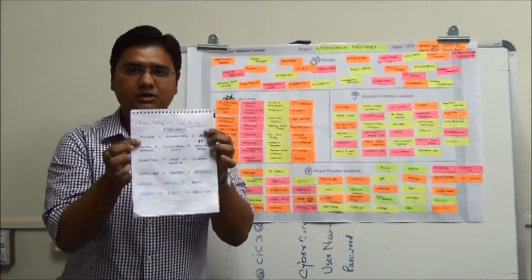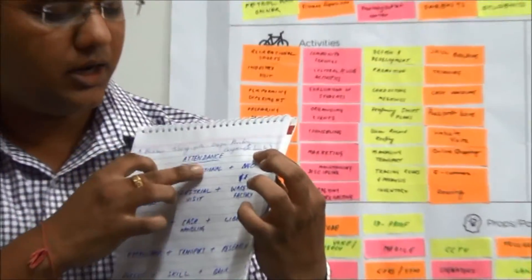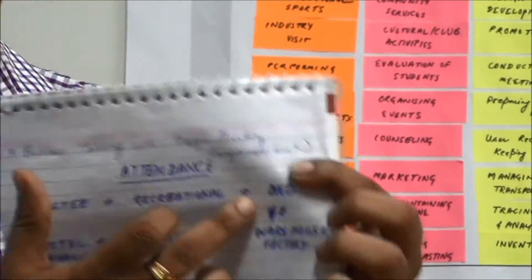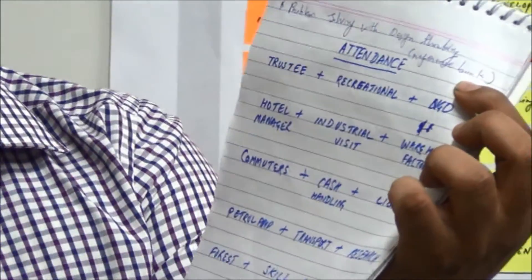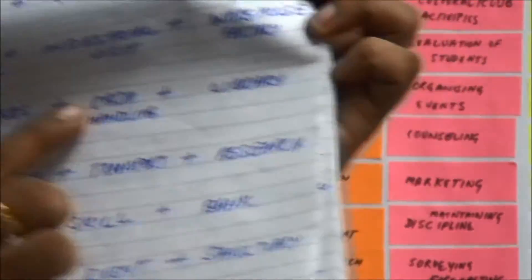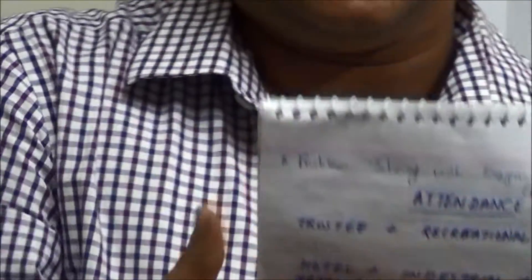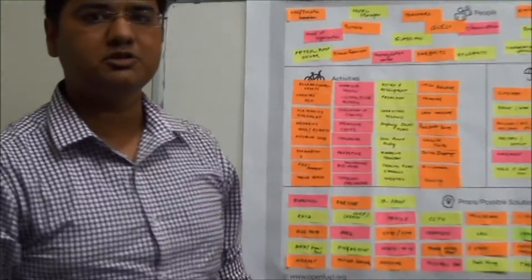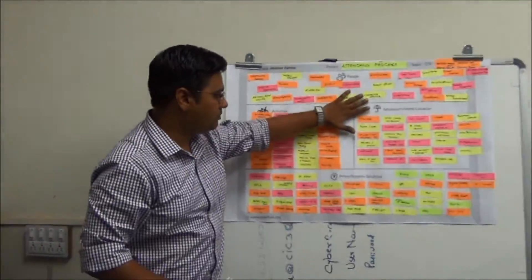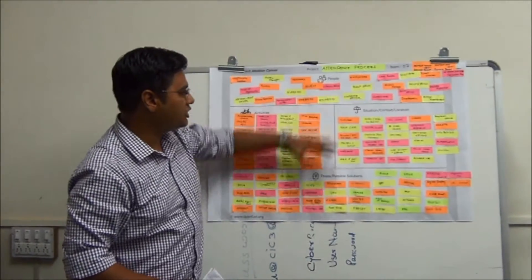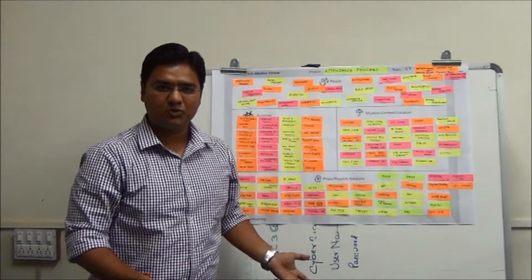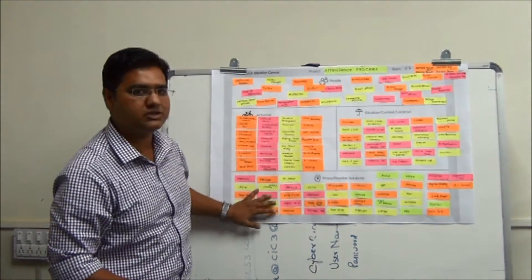Some of the combinations prepared here by using this idealization: trustee plus recreations plus NGO; and a simple combination like commuters plus cash handlers plus a library. These are the processes and activities we can generate from the particular ideation canvas. This is the best way to come up with ideas from the second canvas.